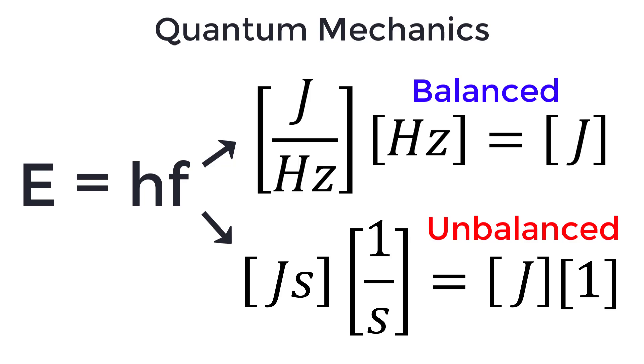When Planck's constant is written in units of joules per Hertz, the energy equation is balanced. However, if Planck's constant is written in units of joule second, the energy equation is unbalanced since there is a hidden unit of one remaining.